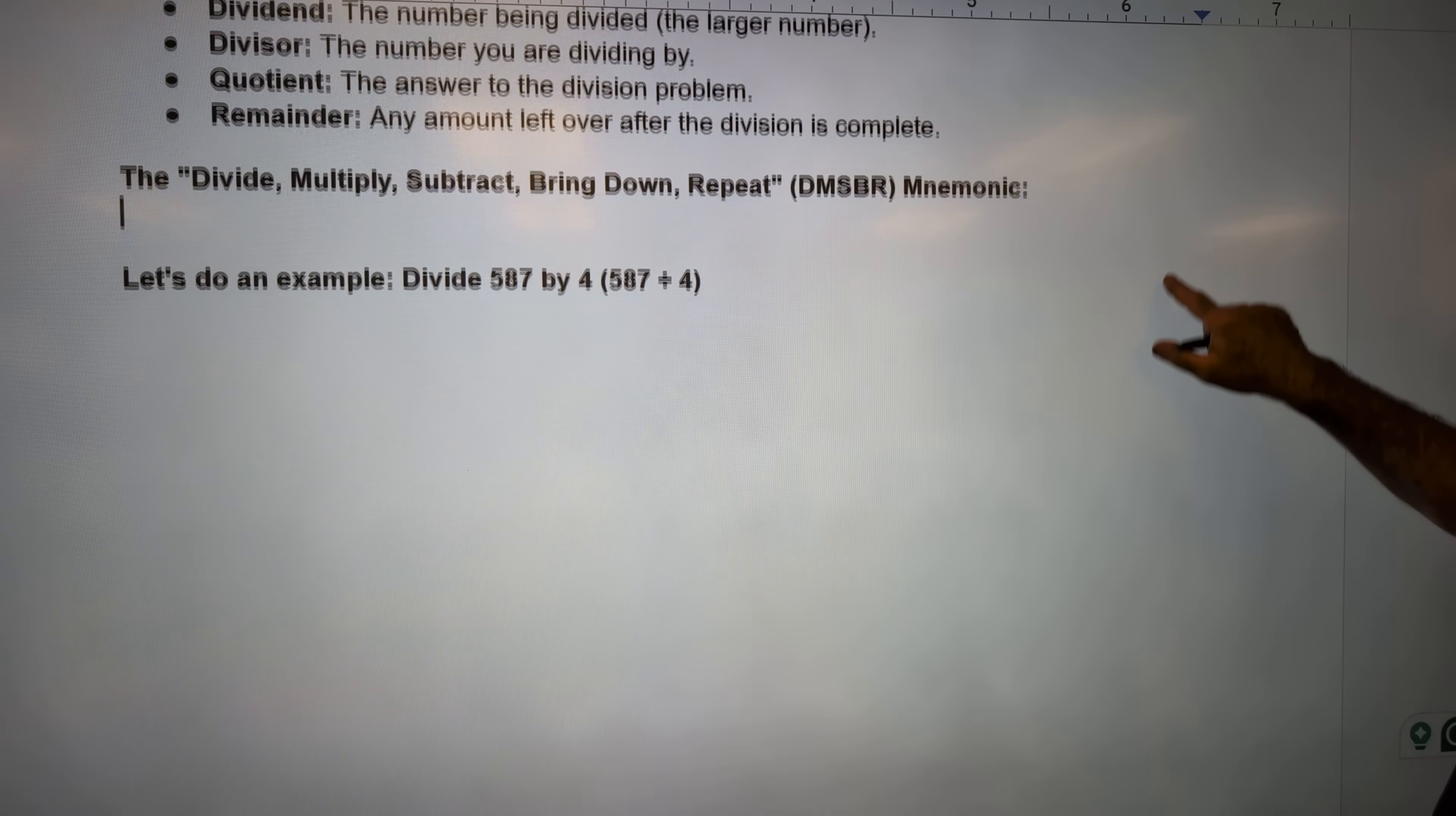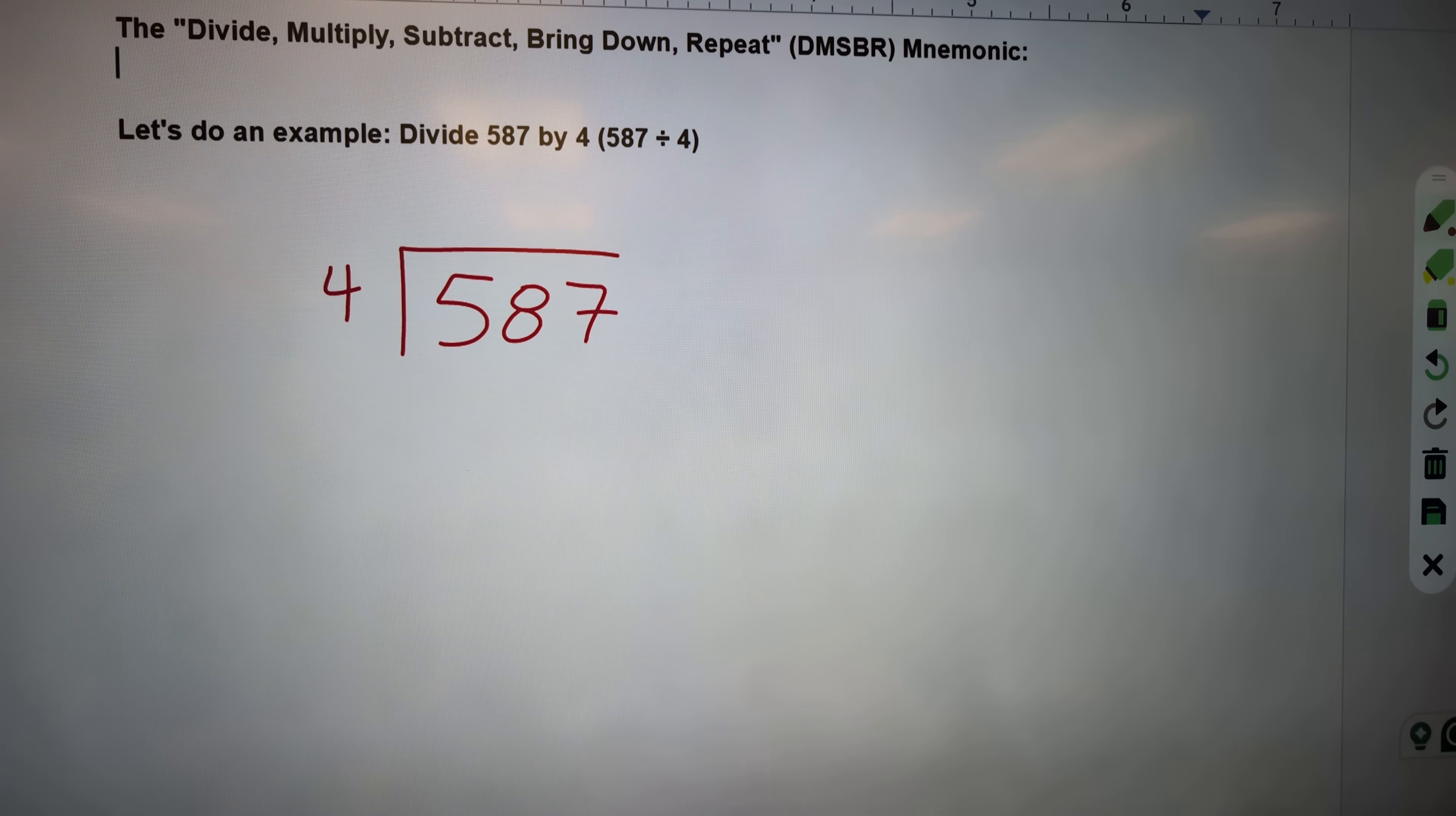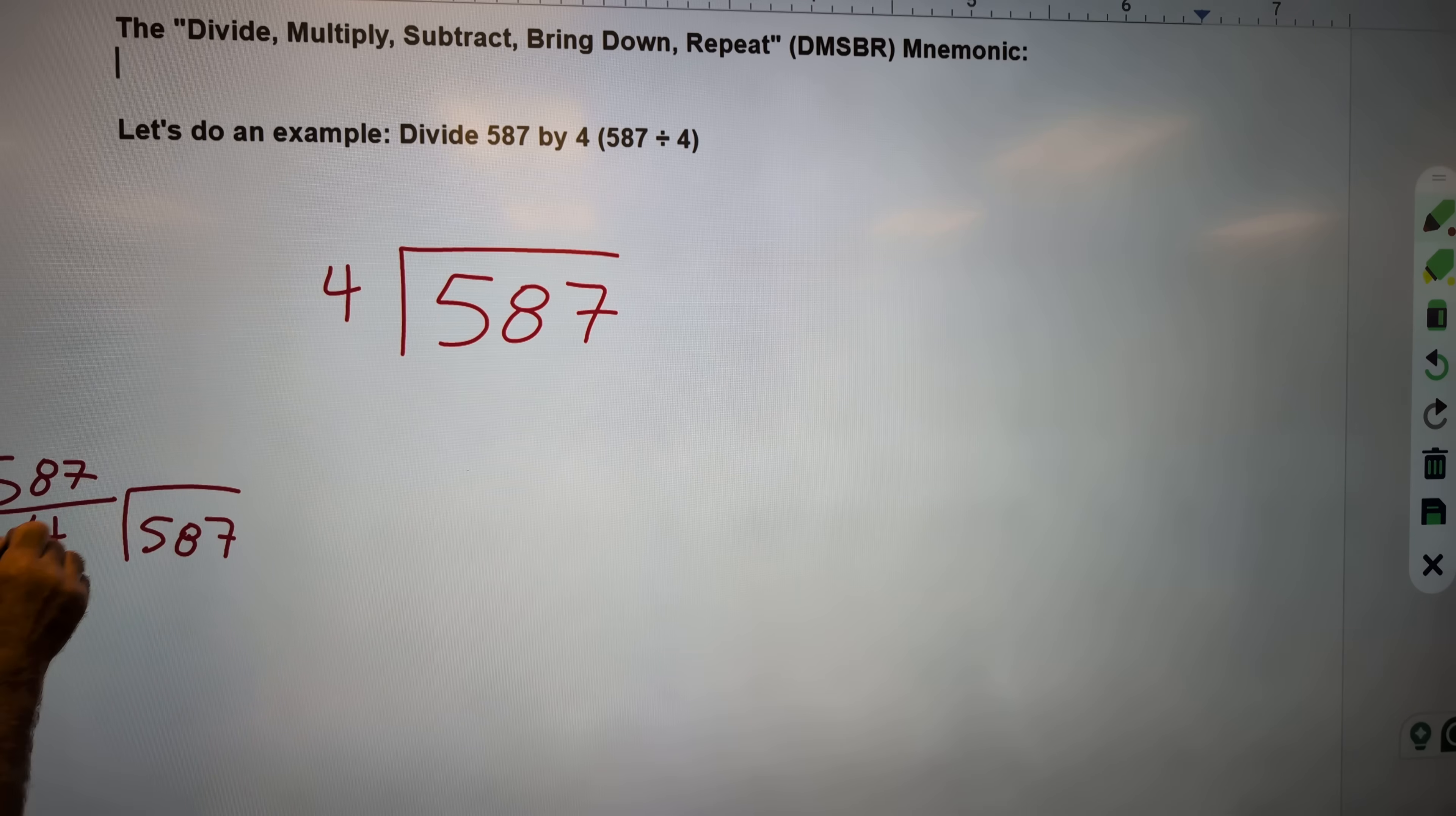Let me move this up a little here. So I have 587 divided by 4. The way I think of this is if I have 587 divided by 4, I think of it as like a tower that always falls over this way. So it always falls over to the right. So as it falls over, I have 587 divided by 4.